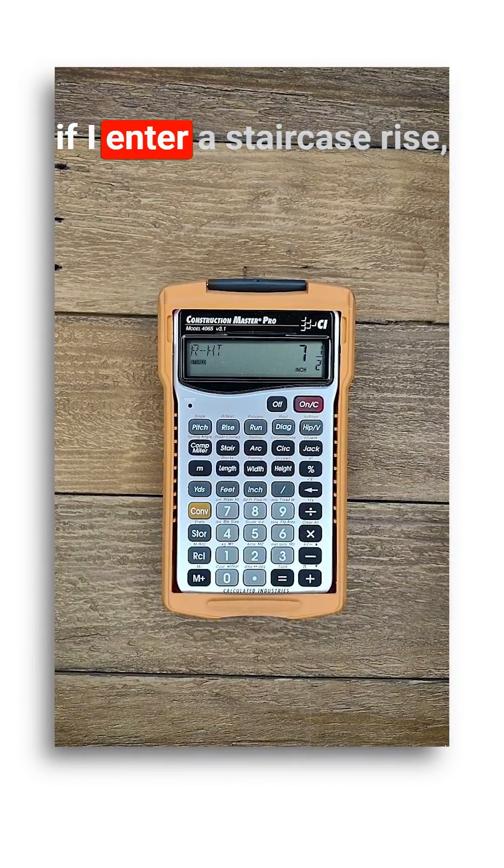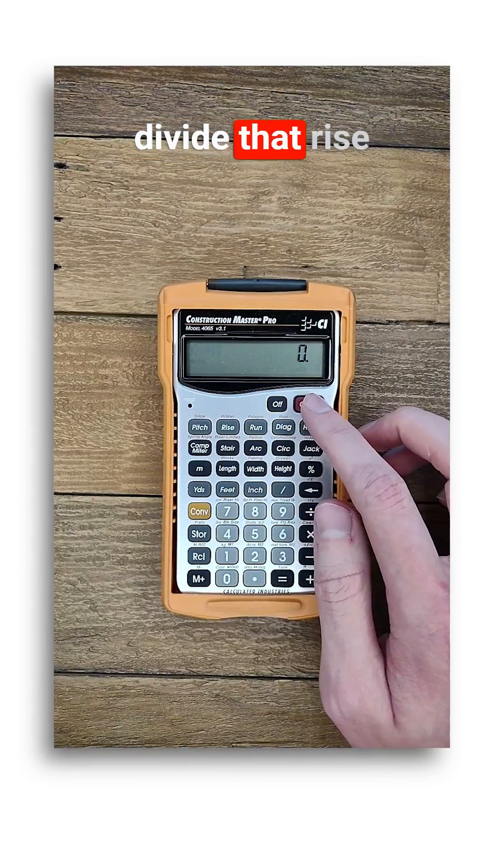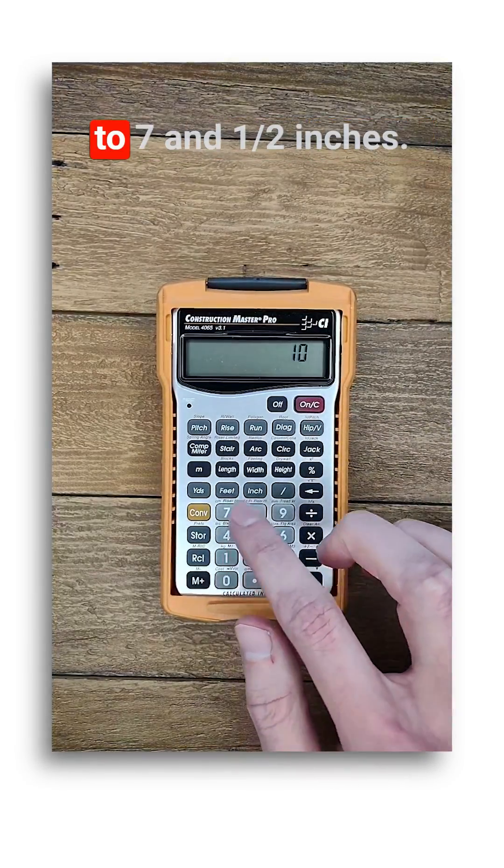This means that if I enter a staircase rise, the calculator will divide that rise to give a value closest to seven and a half inches.